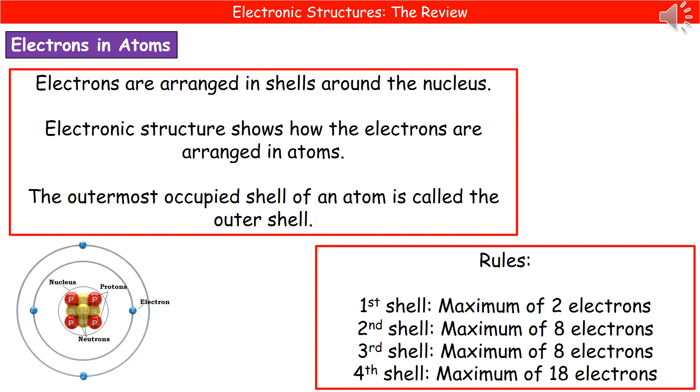So what we actually have are a few rules we've got to remember for the number of electrons that we find in each shell as we work out from the nucleus. The first shell, the one closest to the nucleus, can hold a maximum of two electrons. The second shell can hold a maximum of eight electrons. Third shell is a maximum of eight electrons. And the fourth shell is a maximum of 18 electrons. So 2, 8, 8, 18.